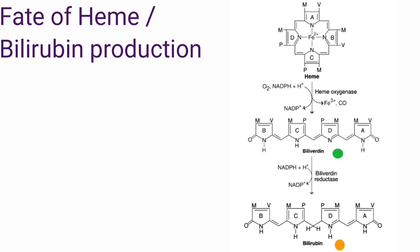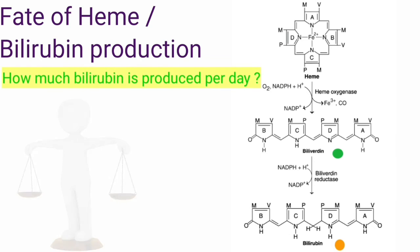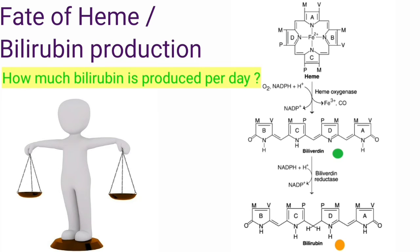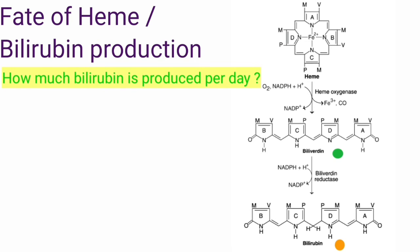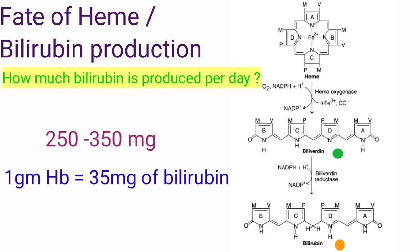Biliverdin reductase also requires NADPH as the coenzyme. About 250 to 350 milligrams of bilirubin is produced per day from hemoglobin and other heme-containing proteins. Approximately 1 gram of hemoglobin produces 35 milligrams of bilirubin. Bilirubin also acts as an antioxidant.